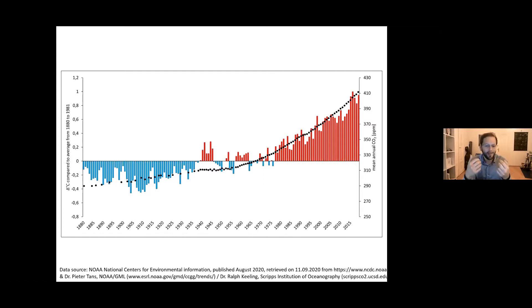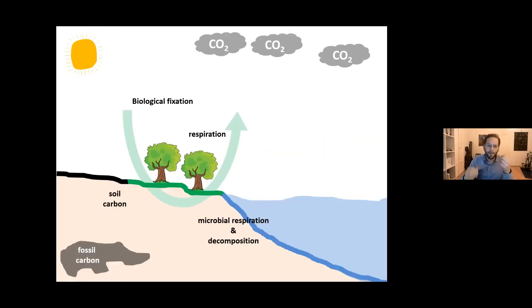One does not really need a sophisticated mathematical model to see in which direction the temperature curve will develop if the carbon dioxide levels are increasing. But why is that?